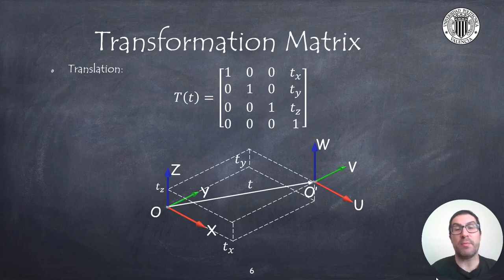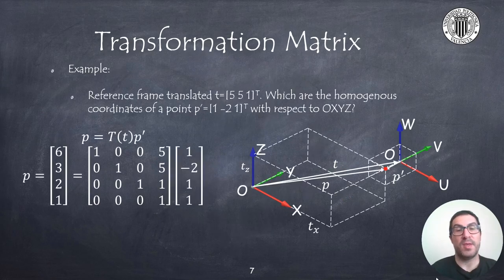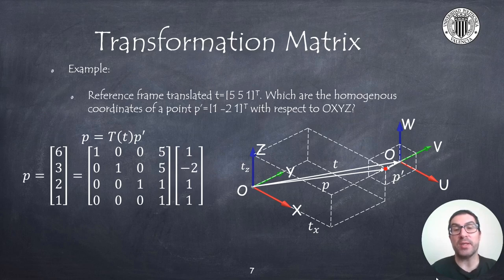For example, a transformation matrix to represent a pure translation looks like the following matrix. In this case, the transformation matrix indicates the displacement between the origins. In this simple example, we will see a first use of a transformation matrix. We want to obtain the coordinates of a point P with respect to the frame OXYZ. That point is expressed with respect to the frame OUVW, the mobile reference frame, which is the given data. Calculating the coordinates of the point P is as simple as computing the multiplication of T times P'.